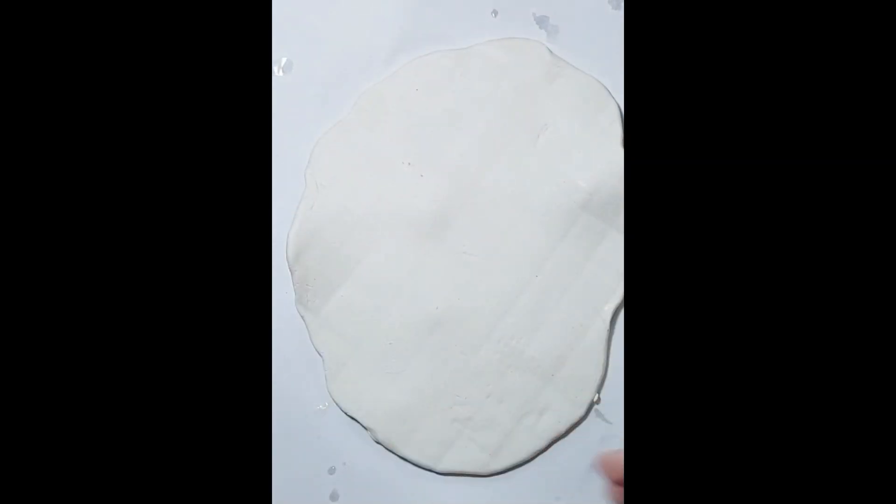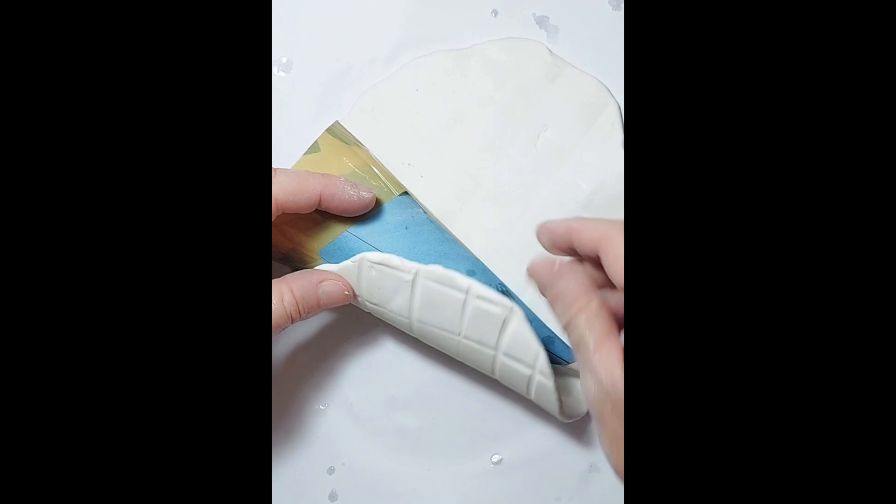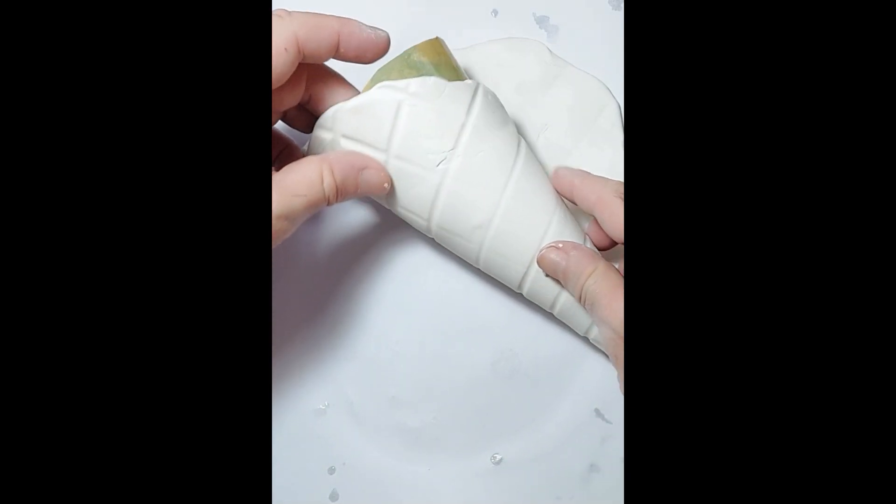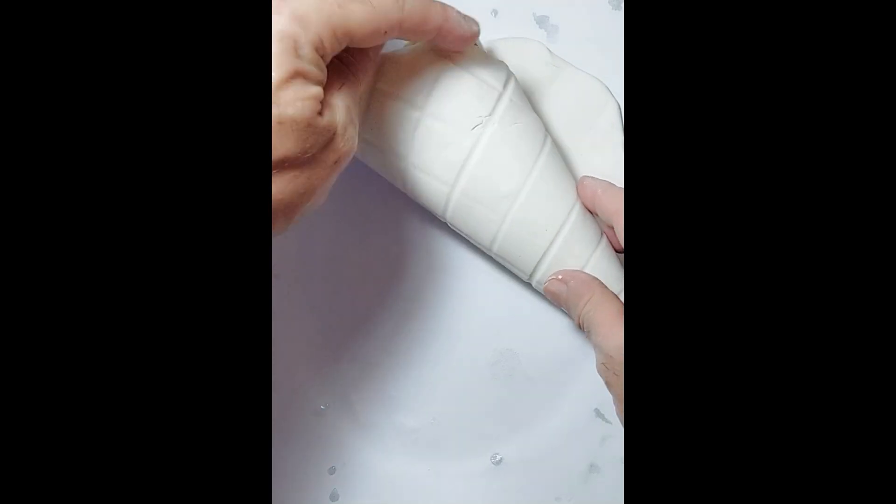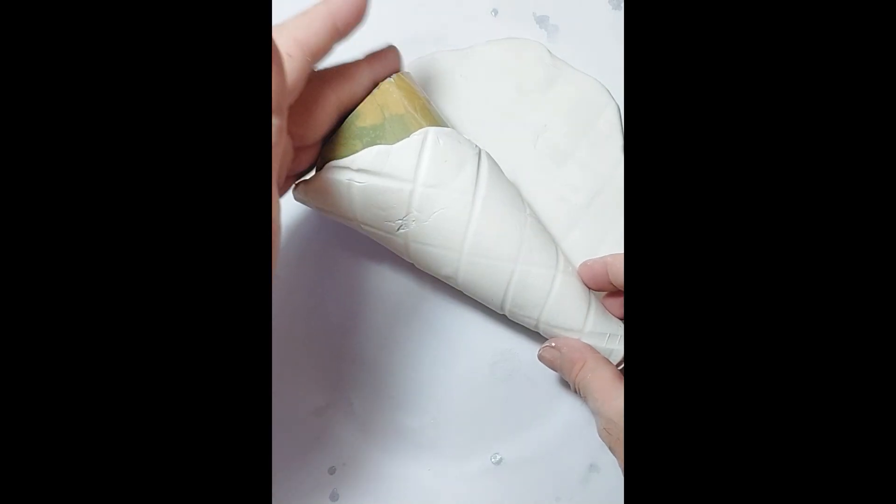So I think the best way to do this is flip it over and then just sort of wrap it. I might cut some of this off, so I'm just going to see how much I've got to play with. I quite like this up there because that's very organic.